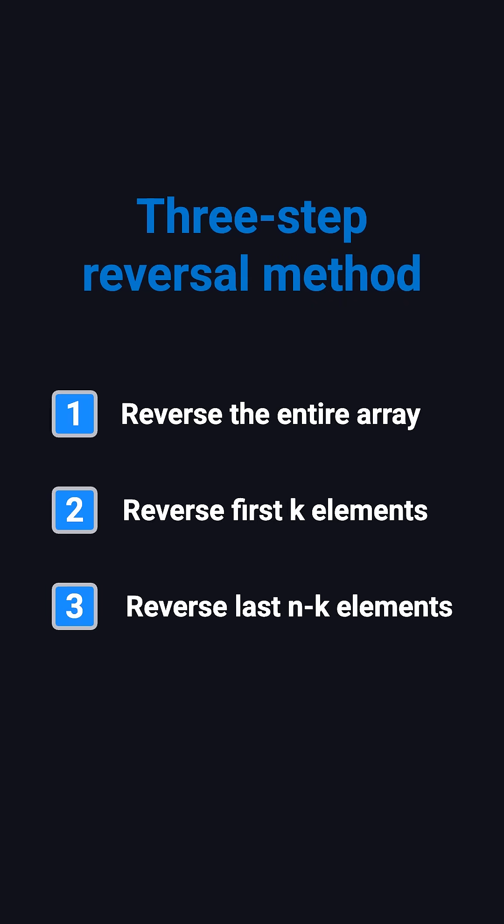Here's the trick. First, reverse the entire array, then reverse the first k elements. Finally, reverse the rest. Just three reversals, and the array is rotated to the right by k steps.